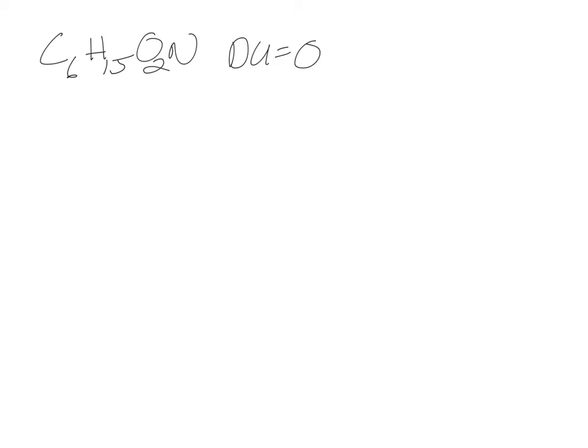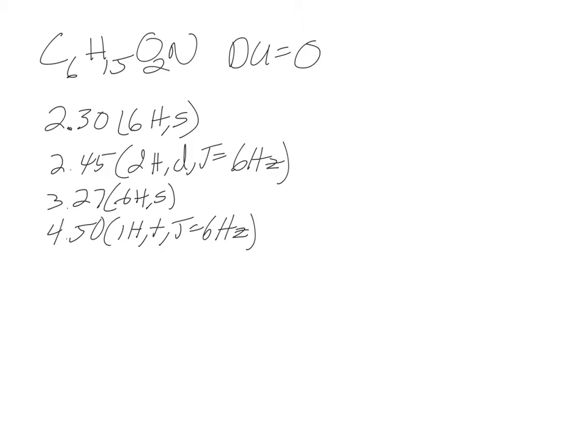Next we want to look at IR if we have it. For this one, I do not have any IR information at all. I have proton and carbon NMR, so I'm going to write out the proton ones first. For the NMR, we have four signals.